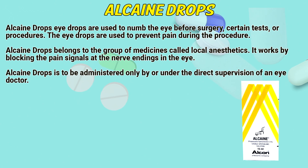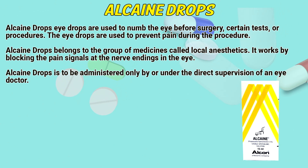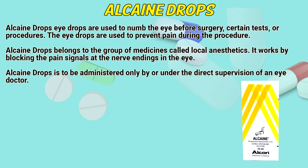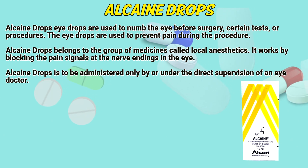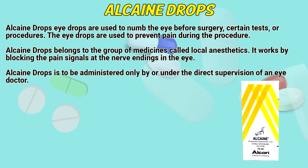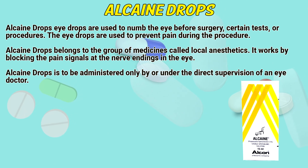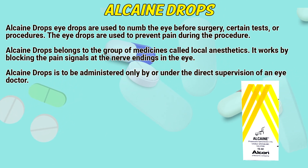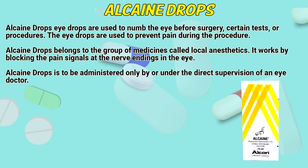Alkane eye drops are used to numb the eye before surgery, certain tests, or procedures. The eye drops are used to prevent pain during the procedure. Alkane drops belong to the group of medicines called local anesthetics. It works by blocking the pain signals at the nerve endings in the eye.